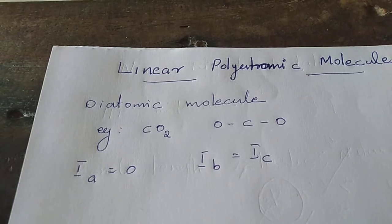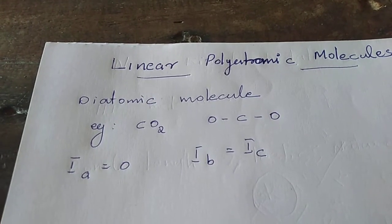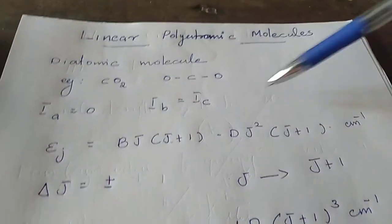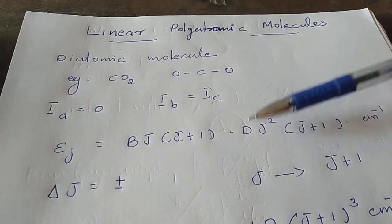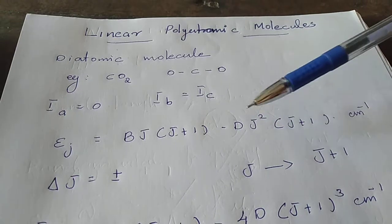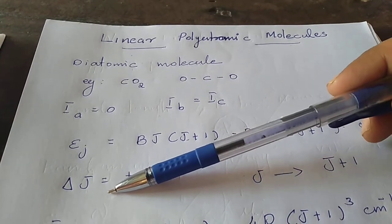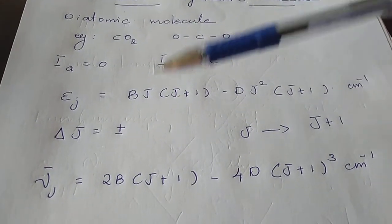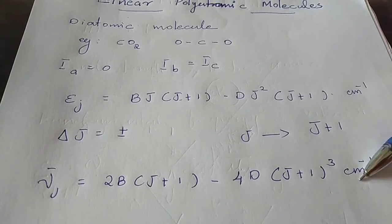In infrared spectroscopy, the corresponding selection rule is ΔJ = ±1. Considering the transition from J to J+1, the corresponding change in energy gives 2B(J+1) minus 4D(J+1)³ cm⁻¹.